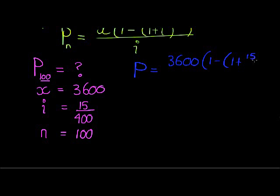And here we go: 15 over 400, and very important - don't forget the negative 100 exponent. All of this is over 15 over 400.